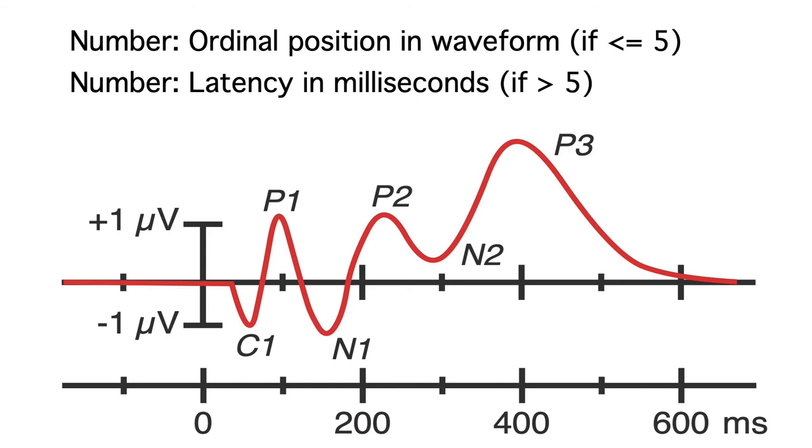The p3 wave is often called p300 because it peaked at around 300 milliseconds in the first study where it was observed, but it can peak as late as 600 milliseconds in some experiments. And yet it's often called p300 under the assumption that it's the same brain process but occurs at different times depending on the difficulty of the task.